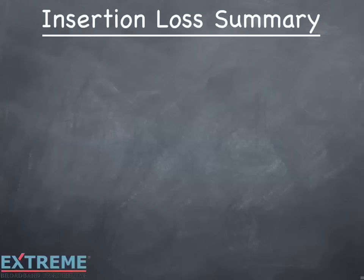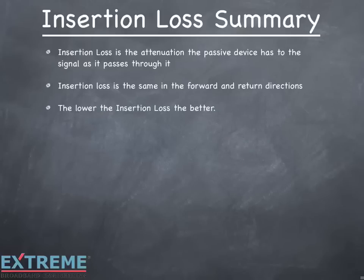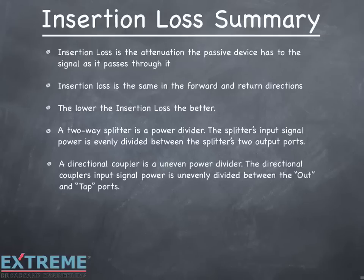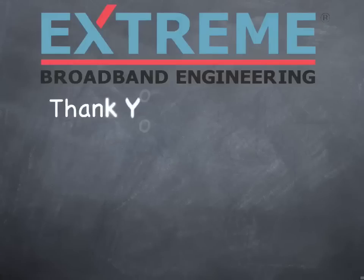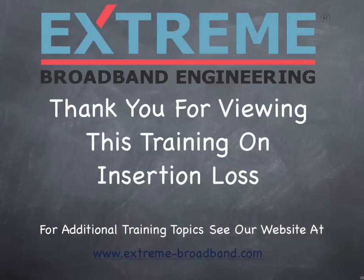Let's review what we've learned in this training session on insertion loss. Insertion loss is the attenuation the passive device has to the signal as it passes through it. Insertion loss is the same in the forward and return directions — the lower the insertion loss, the better. A two-way splitter is a power divider with input signal power evenly divided between two output ports. A directional coupler is an uneven power divider with signal power unevenly divided between the out and tap ports. Two-way splitters and directional couplers are the building blocks of all other splitting devices. Thank you for viewing this training on insertion loss. For additional training topics, see our website at www.extreme-broadband.com.